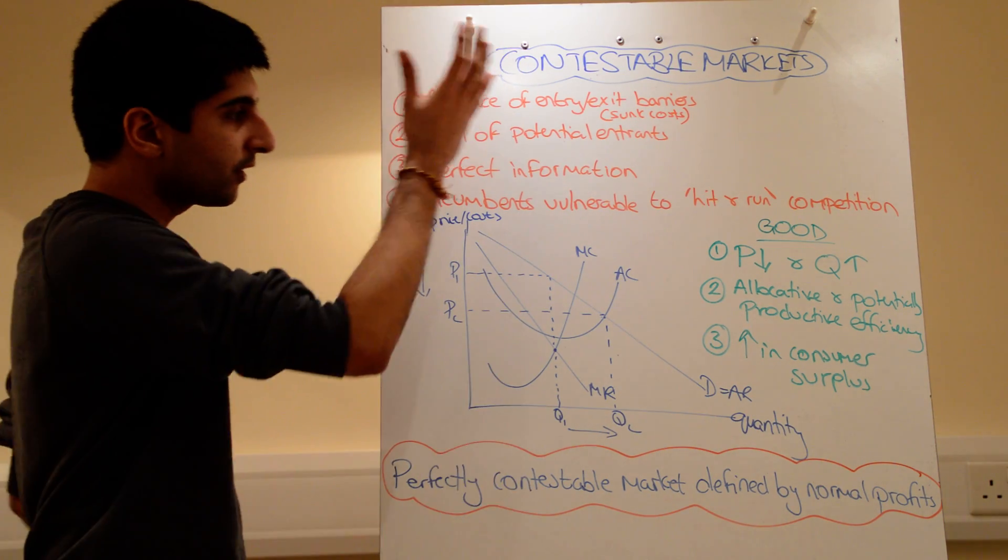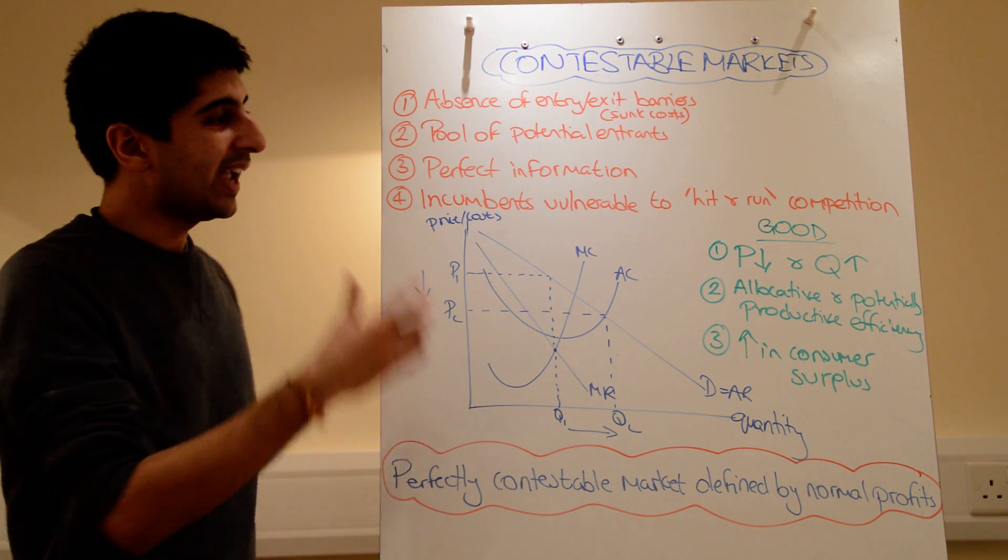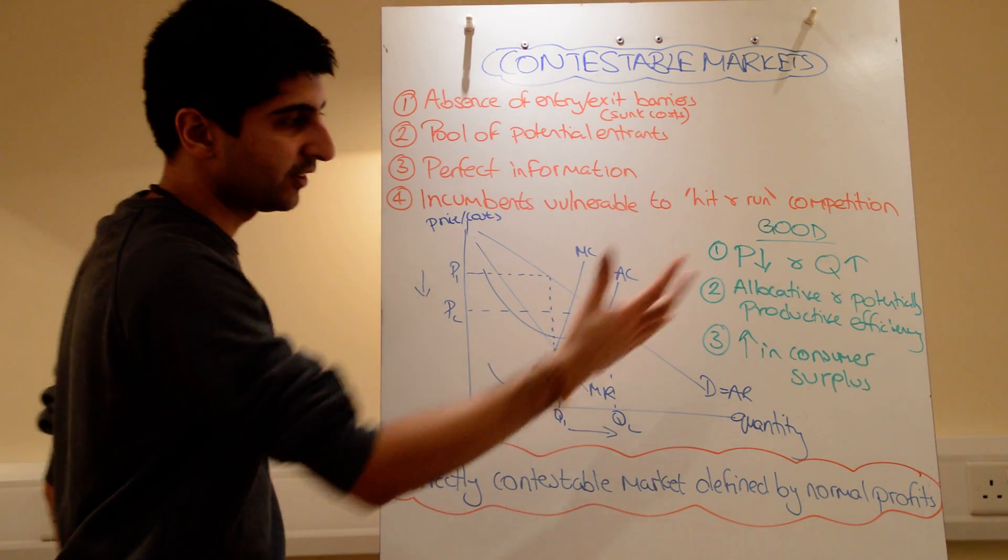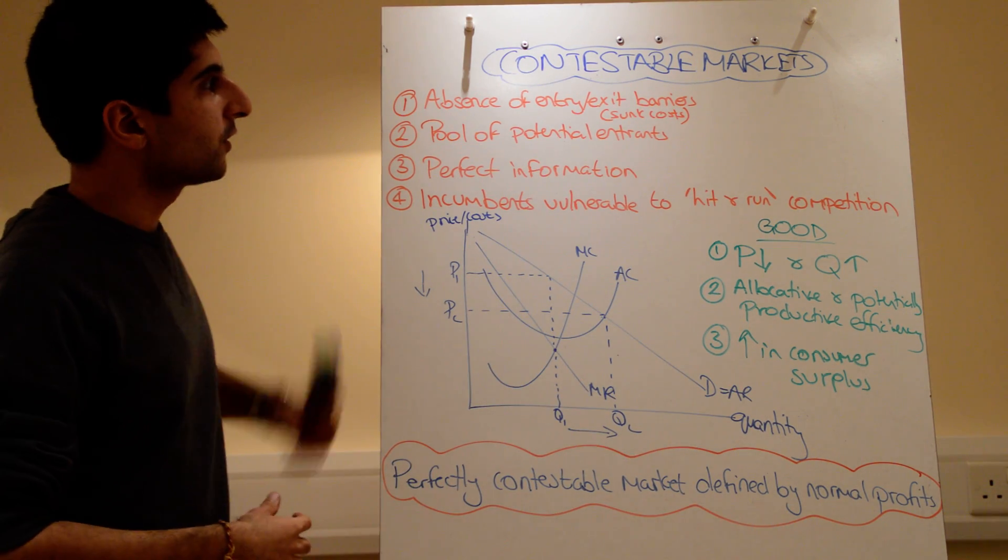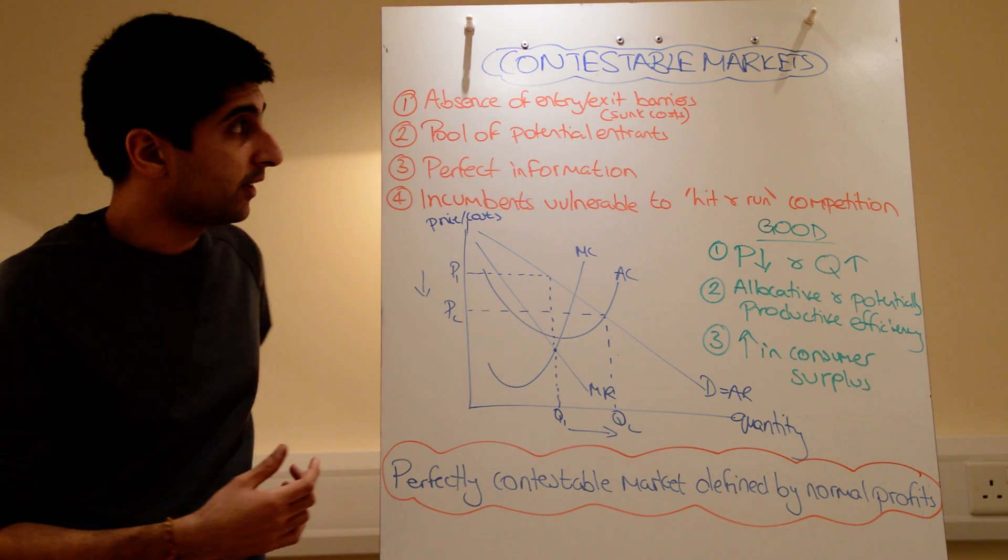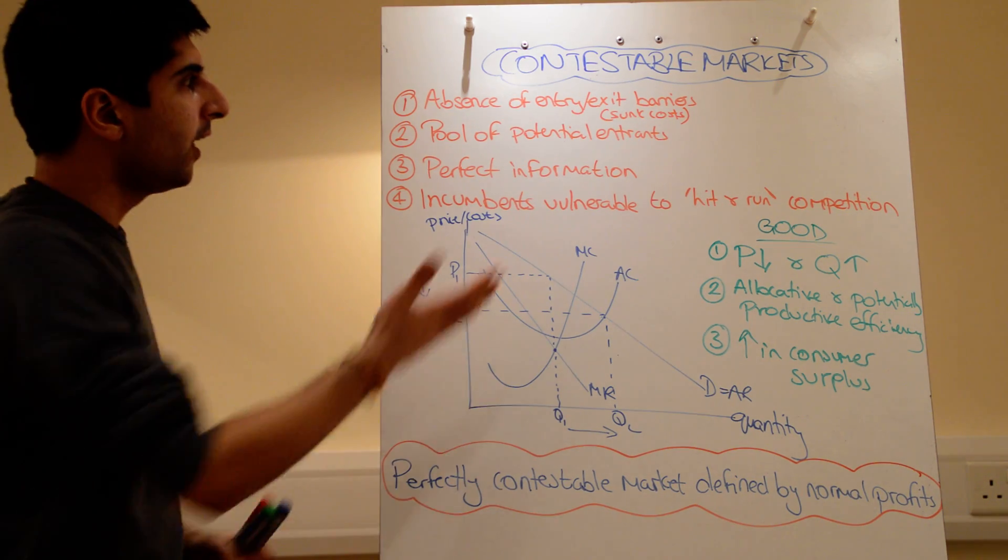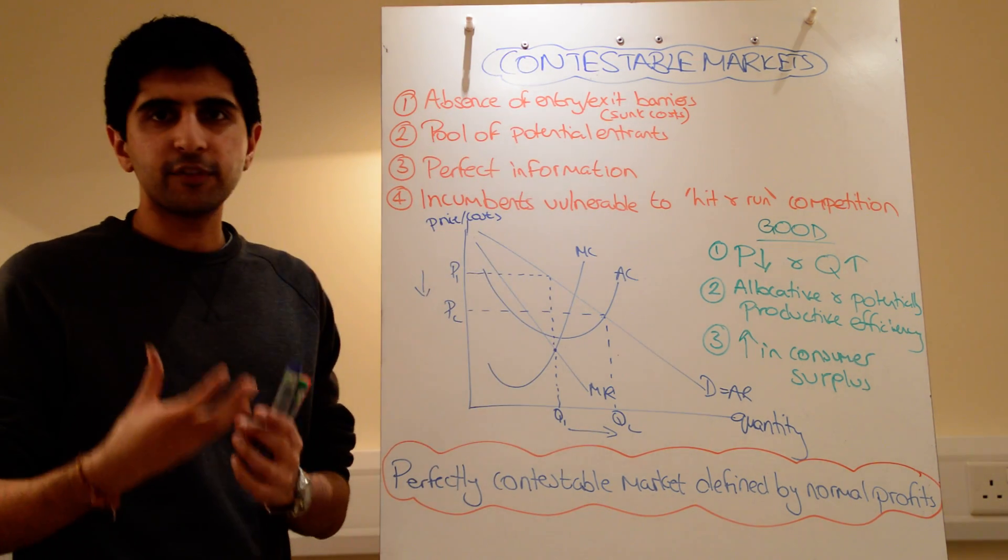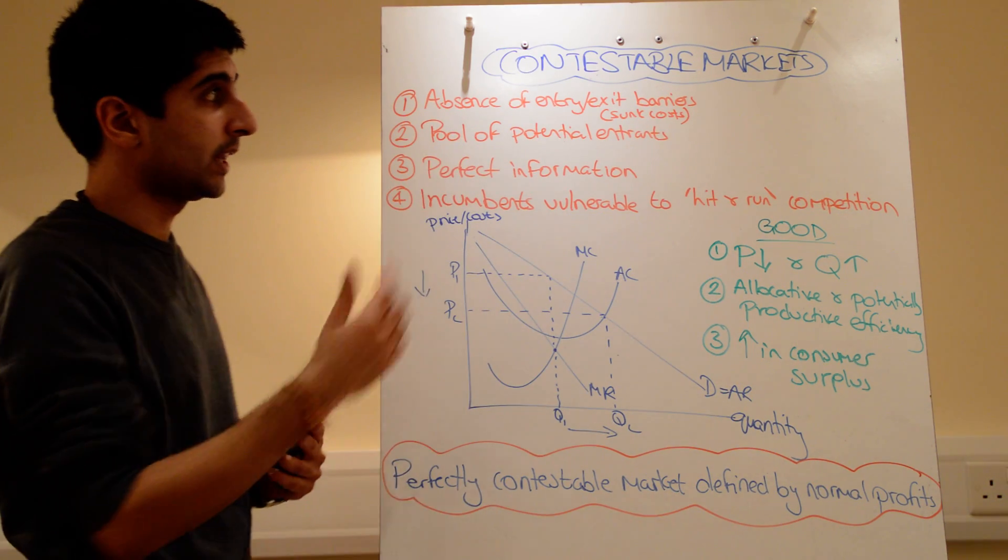Again, we're going to look at characteristics, conduct in contestable markets, then we're going to look at the efficiencies and the gains as a result. So let's look at the characteristics of what a contestable market is. These are all examples of perfectly contestable markets, the characteristics you'd see in those.